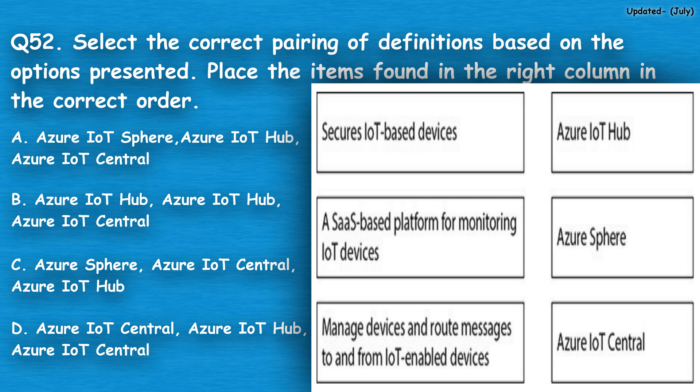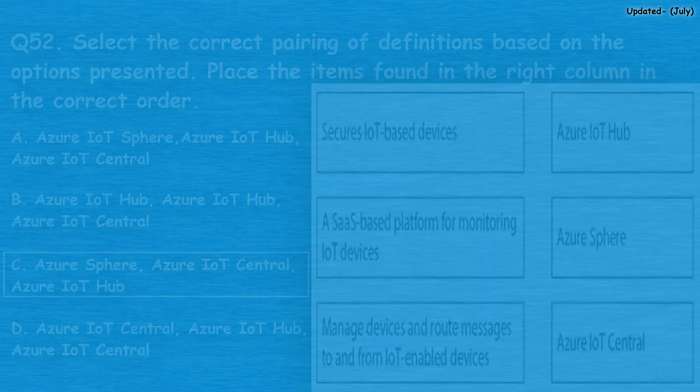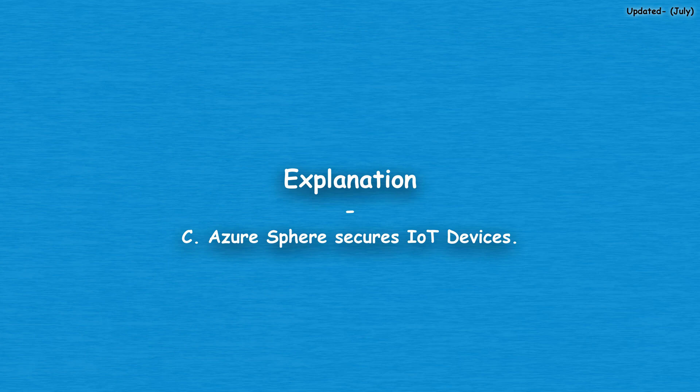Question number 52: The correct answer is option C — Azure Sphere, Azure IoT Central, Azure IoT Hub. Azure Sphere secures IoT devices.